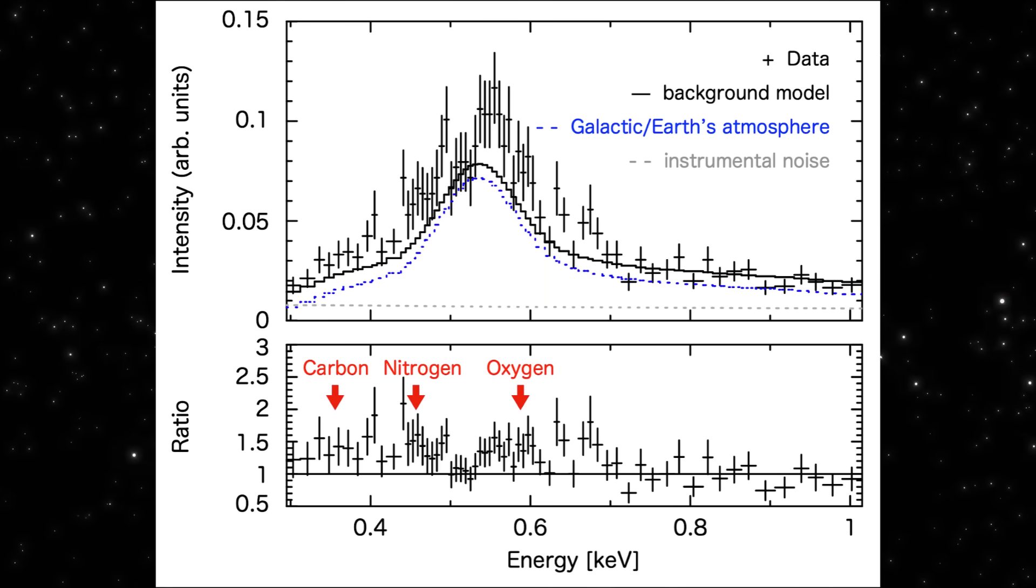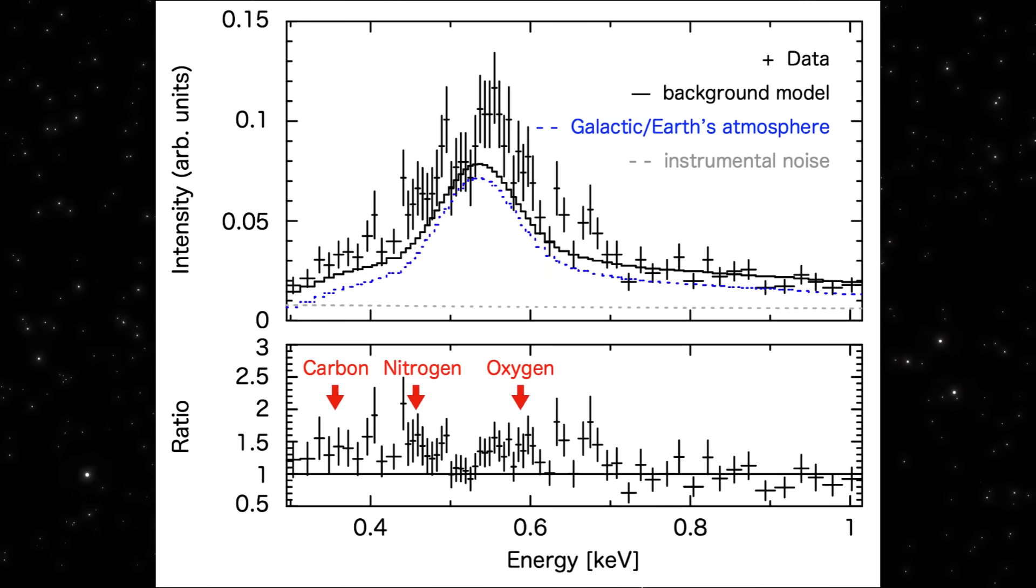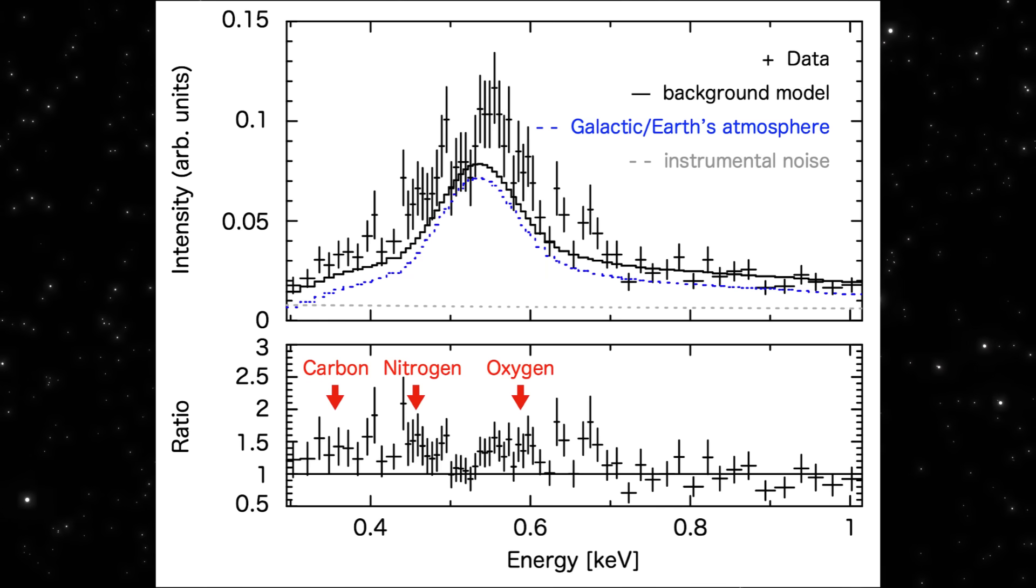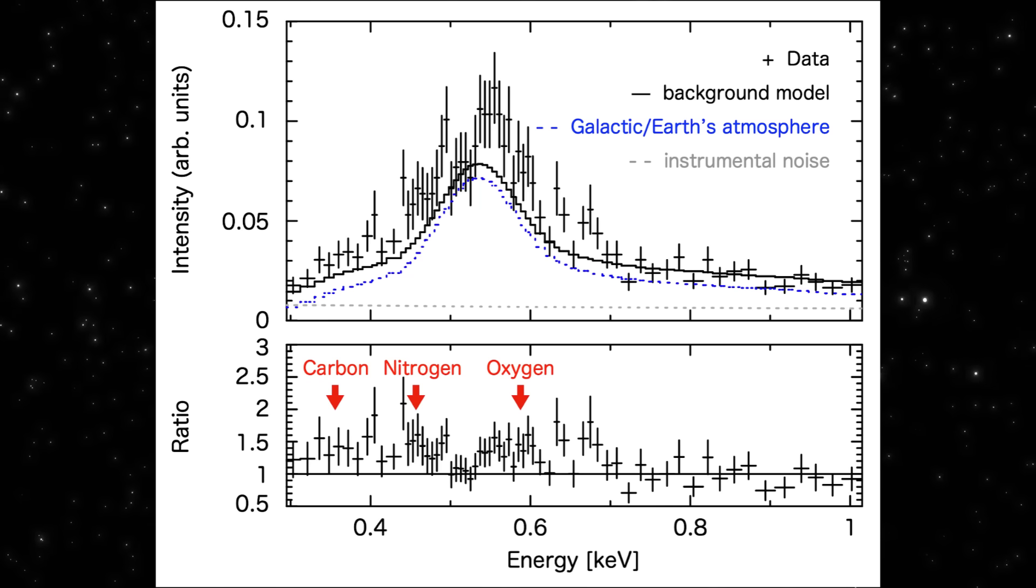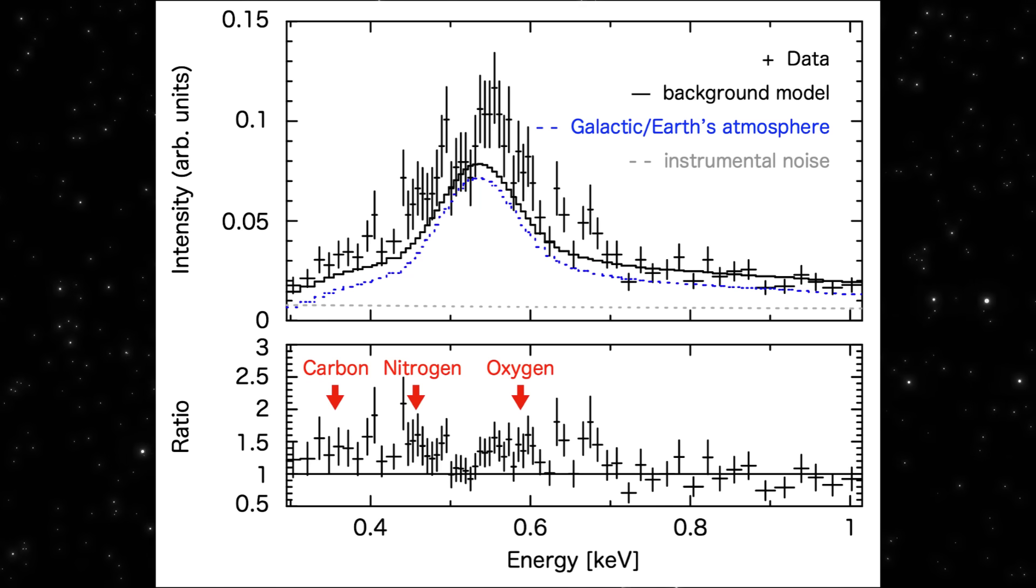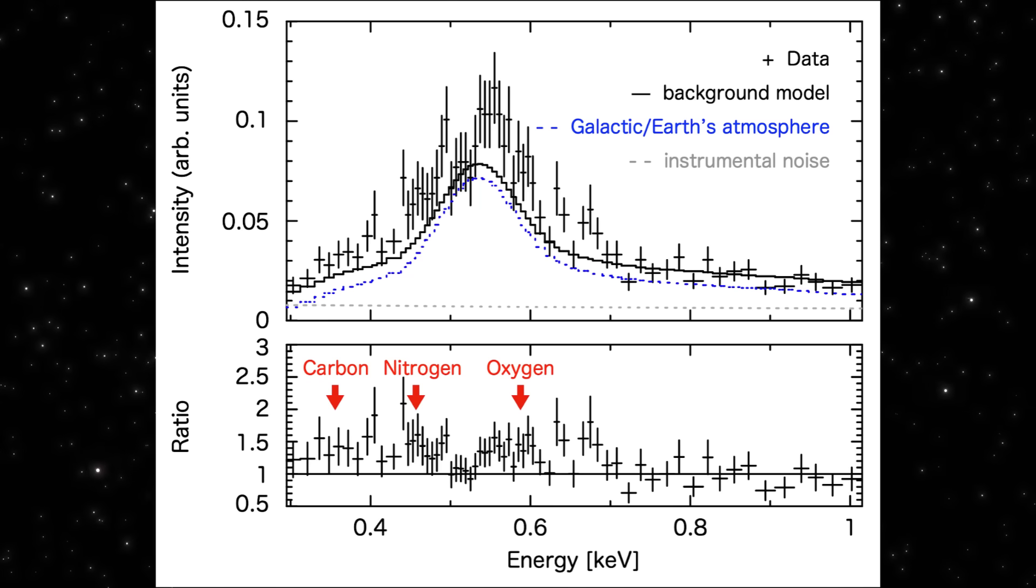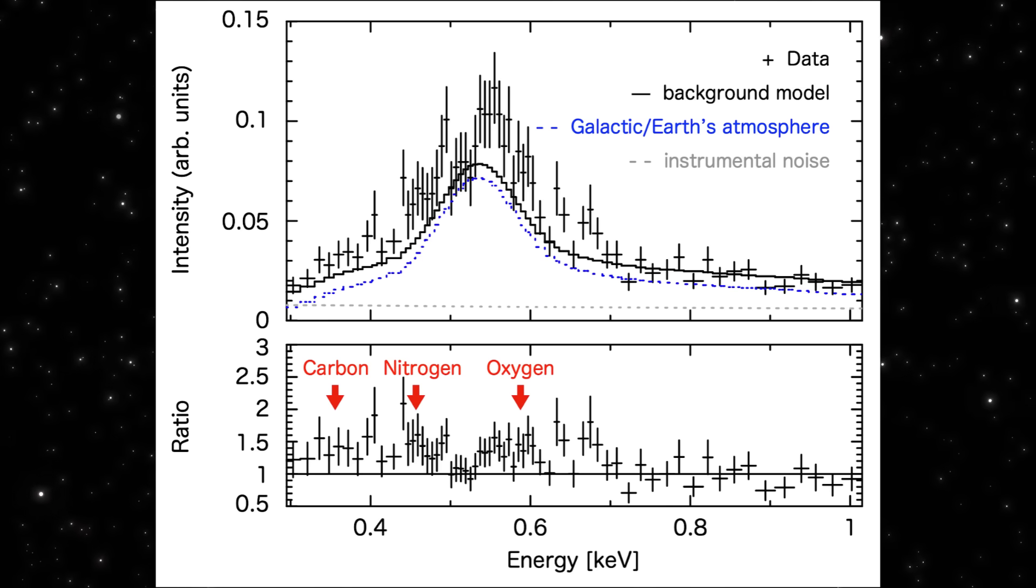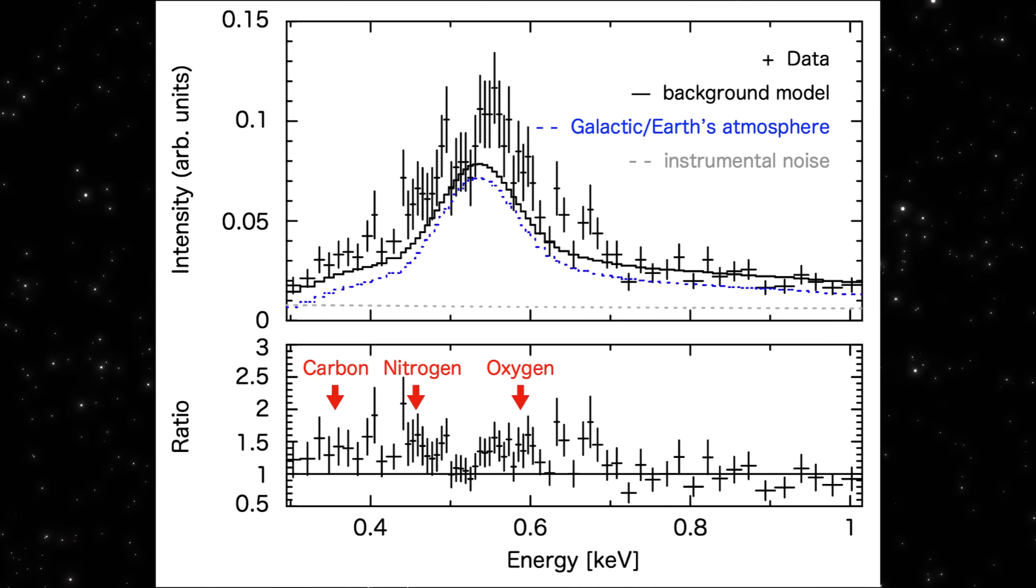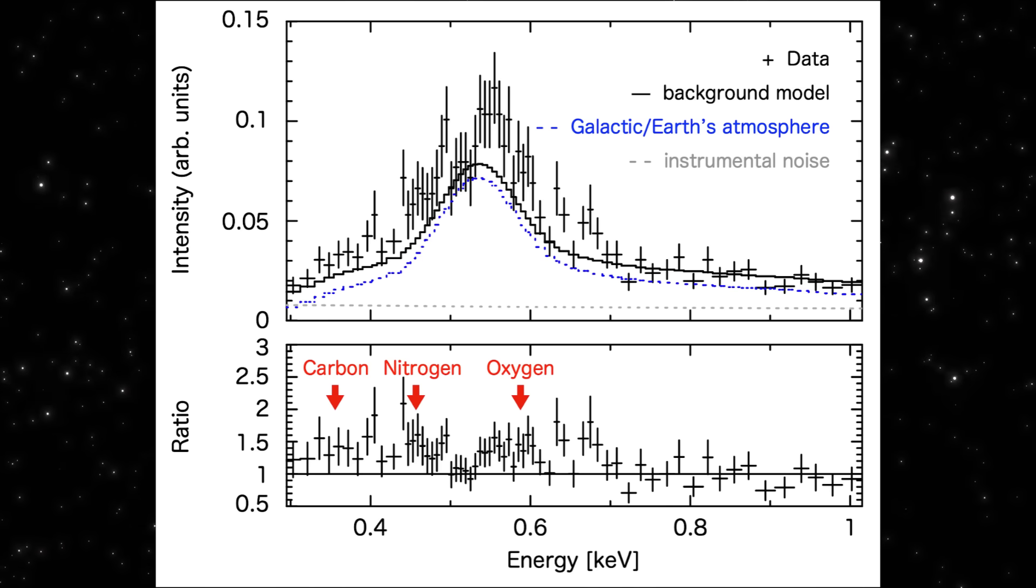Yet the signature is there, clear as day. So either this object is shedding material far more efficiently than anyone thought, or there's a physical mechanism at work that doesn't fit the playbook we use for solar system comets. And that's why this detection is so disruptive.